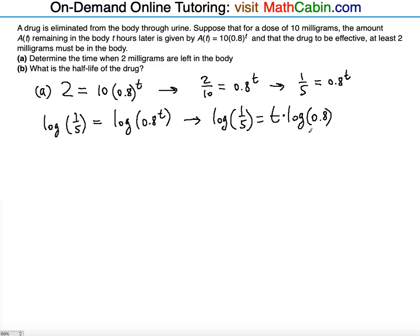So dividing both sides by log of 0.8 isolates the T and solves for it at the same time. So T is equal to log of 1/5 divided by log of 0.8.